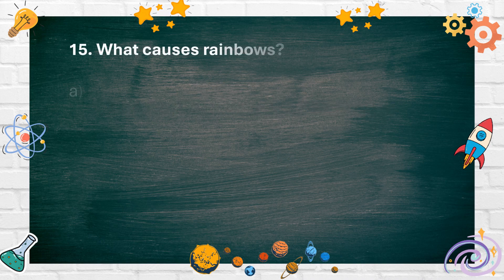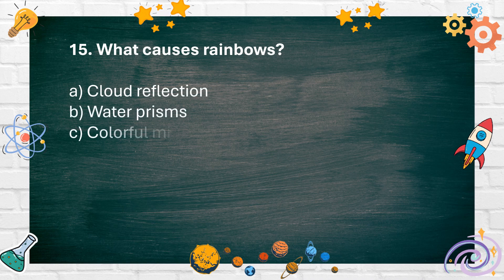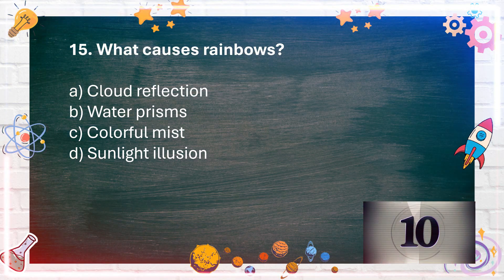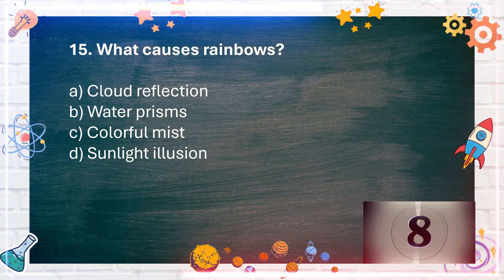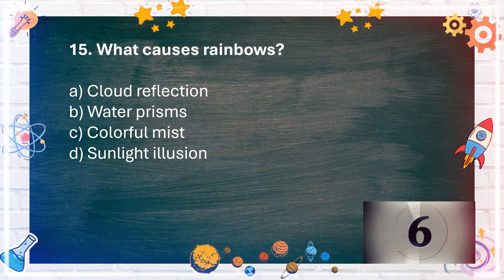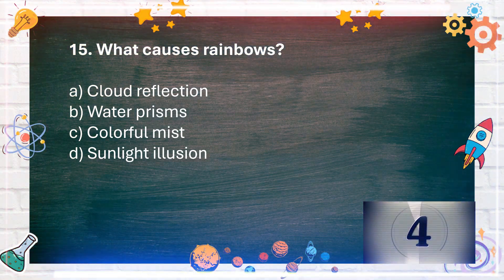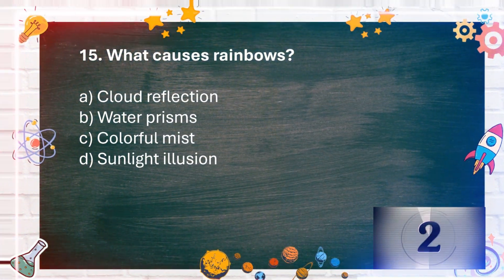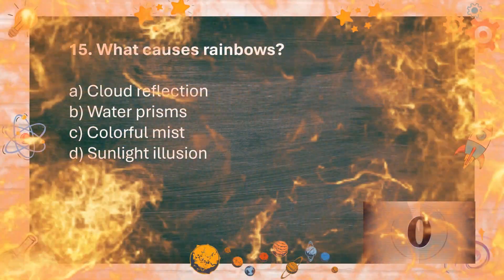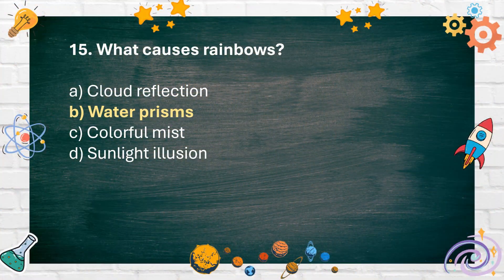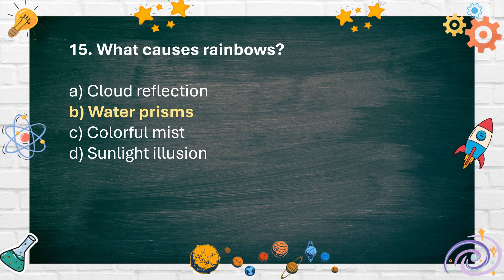Number 15. What causes rainbows? A. Cloud reflection B. Water prisms C. Colorful mist D. Sunlight illusion. The answer is B. Water prisms.